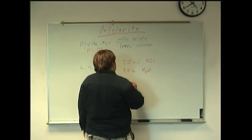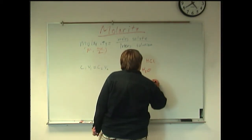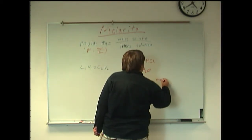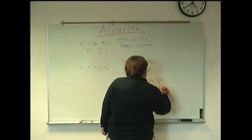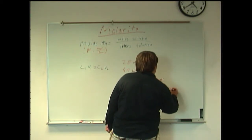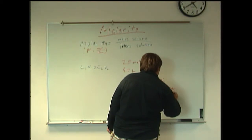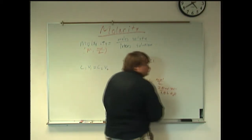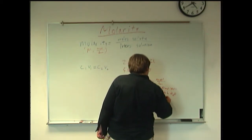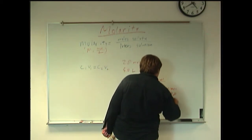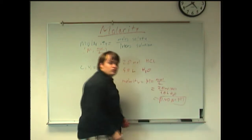That's just your number of moles divided by the number of liters. That's just 2 moles divided by 5 liters. If you do the calculations, you get 0.40 molar HCl, and that's how you record your answer.